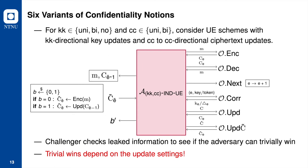Note that security notions defined in prior work were designed for bidirectional updates; no security notions were introduced in the unidirectional update setting. We now define six variants of confidentiality notions. These six variants are a combination of three versions of key updates and two versions of ciphertext updates. Security notions for UE schemes with unidirectional updates are included.